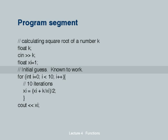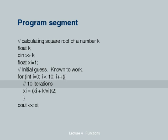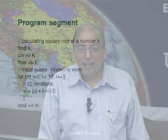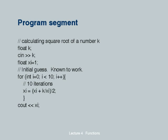We consider this as the initial guess, known to work. The iteration itself is extremely simple. For int i equal to 0, i less than 10, i plus plus — doing 10 iterations. In each iteration, I use the present value of x_i to calculate x_i plus k divided by x_i, the whole thing divided by 2. This is the formula derived for finding the next better value of x. We assign this value back to x_i itself. When the closing brace is encountered, the computer reiterates and successively uses the new values of x_i. At the end of 10 iterations, whatever is the value of x_i, we print it out.